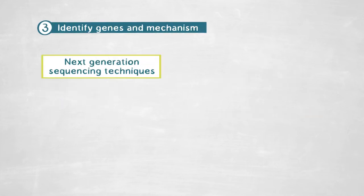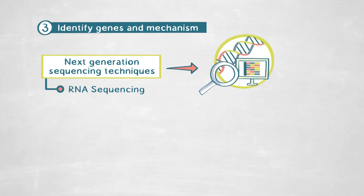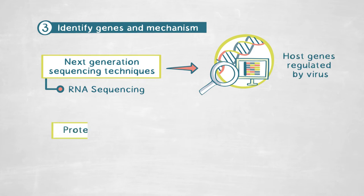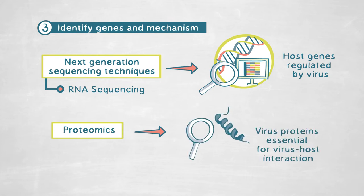We combined this with next-generation sequencing techniques such as RNA sequencing, which allows us to identify specific genes in the host genome that are being up- or down-regulated by the viral infection. We also combined this with proteomics, which allows us to identify specific structural proteins of the virus that are important and extremely relevant for virus-host interaction. Altogether, these culturing, molecular, and next-generation sequencing techniques allow us to assess specifically what is the outcome of the viral infection for the virus and for the host, and what are the specific mechanisms underlying this interaction.